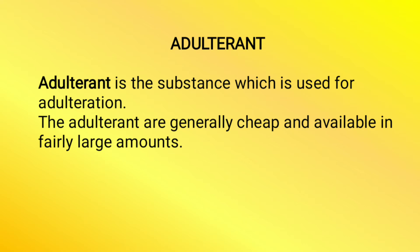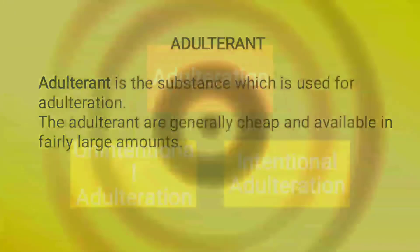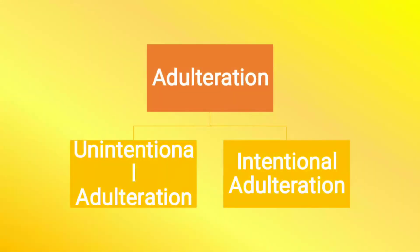Therefore this adulteration is done. Now, adulteration can be of two types. First one is unintentional adulteration — yani ki jo jaan bujhkar nahi kiya gaya hai. And the second one is intentional adulteration — jo jaan bujhkar kiya gaya hai in order to gain maximum profit.